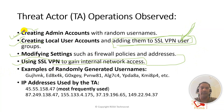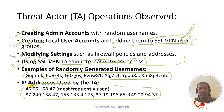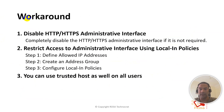In summary, threat actors are creating admin accounts, creating local user accounts, modifying settings such as firewall policies and addresses, and using SSL VPN to gain internal network access. Examples of randomly generated usernames observed from already-compromised devices include strings like 'gughmk' and 'ed8'. Source IPs have also been documented for this breach. All this information is available on the FortiGuard PSIRT website — FortiGuard.com/PSIRT — which is the public announcement of this vulnerability.